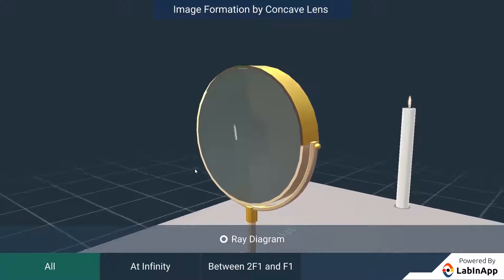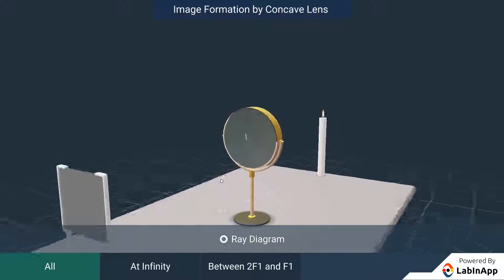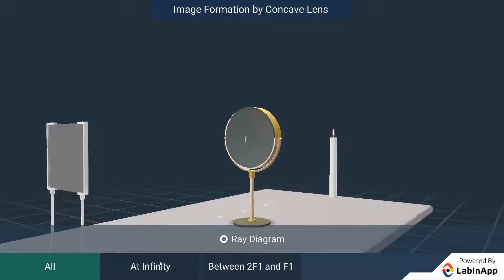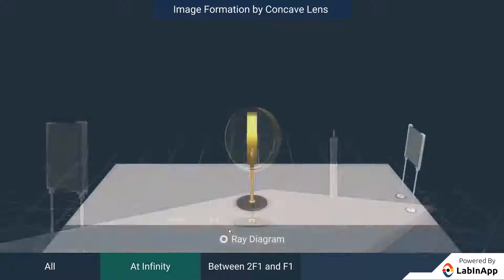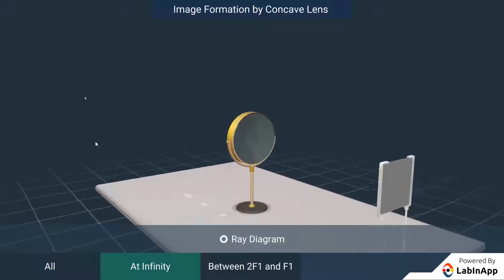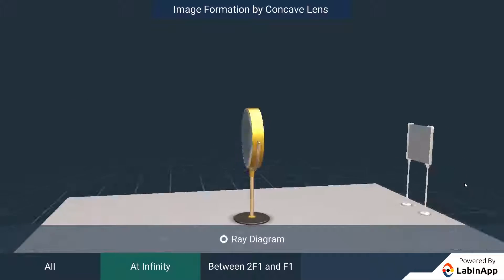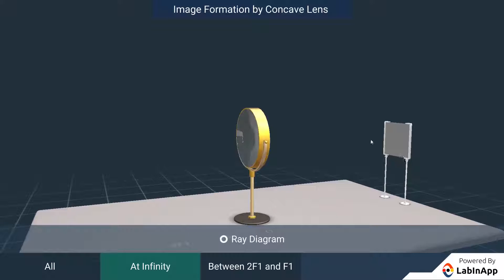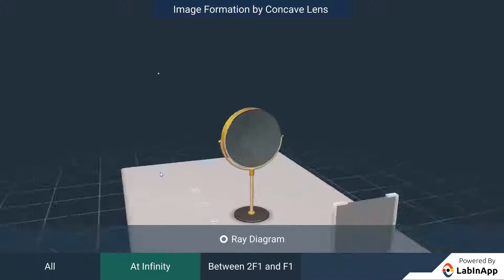Now, move the candle far away from the lens and observe. We can see that the image is not formed on the screen — the image is virtual, smaller in size and erect.